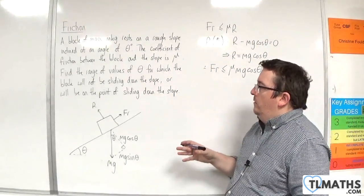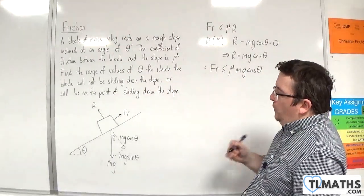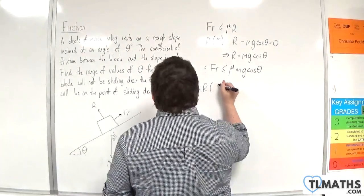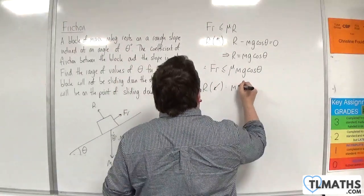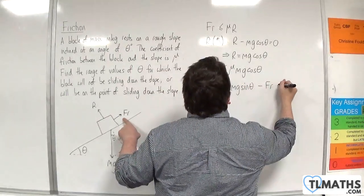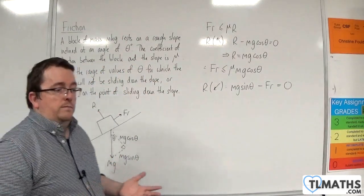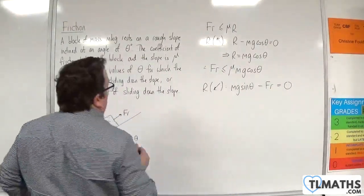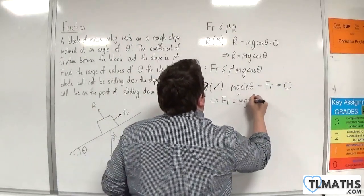Now, when the block is at rest, we can look at resolving parallel to the slope. Taking down the slope as positive, we have mg sine theta minus the friction equals 0, because it's not moving. So that means the friction is equal to mg sine theta.